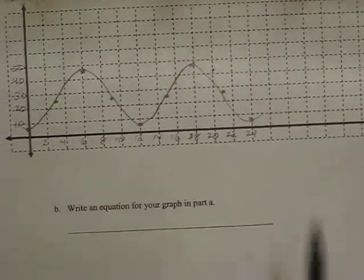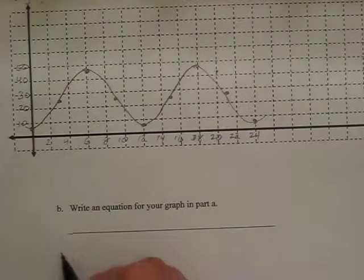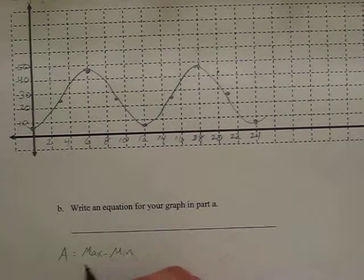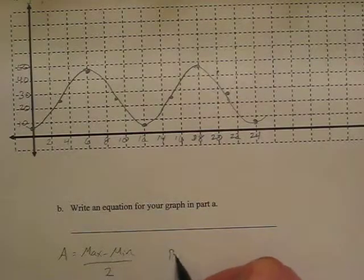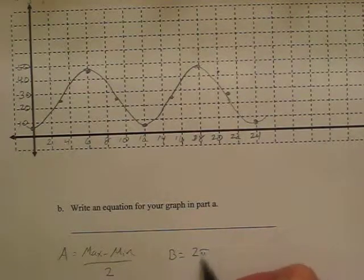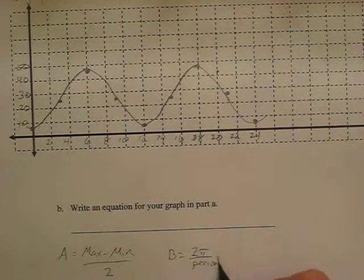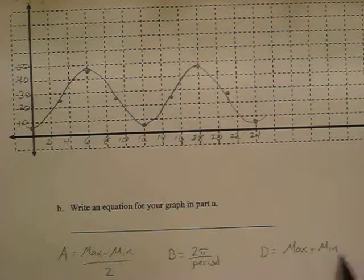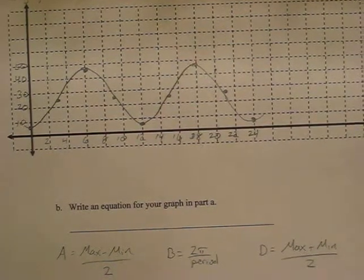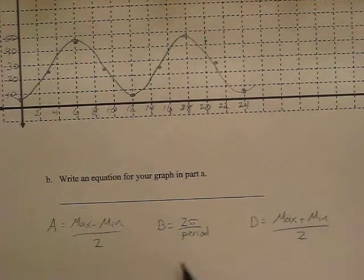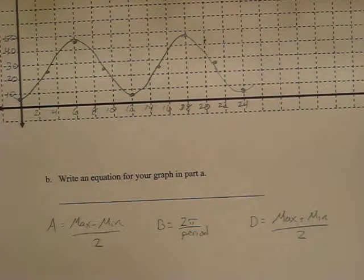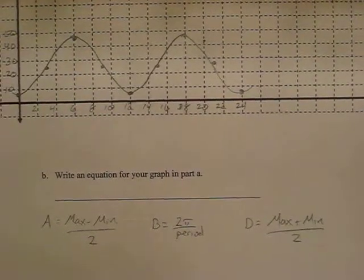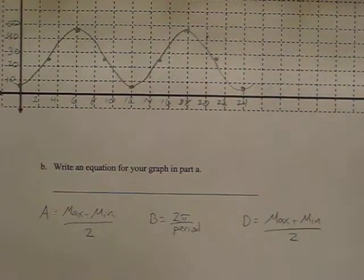To write the equation, it's the same as writing equations from before. You find a is equal to the maximum minus the minimum divided by 2. B is equal to 2 pi divided by the period. And d is equal to the maximum plus the minimum divided by 2. Just like before. So, the next video is going to walk us through this question. So, but go ahead and try to figure it out based on what you know from the other kinds of equations that we've written.